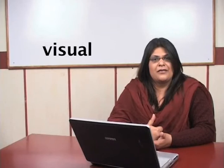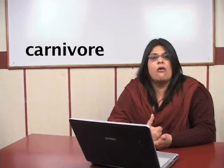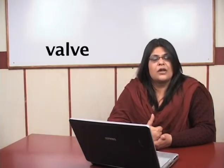Let's practice a few words with the V sound first — please repeat and enunciate the sound with me. V-V-V. Visual. Variety. Carnivore. Valve. The friction in this sound should be audible. Once more: Visual. Variety. Carnivore. Valve.